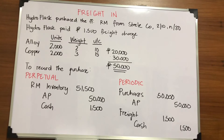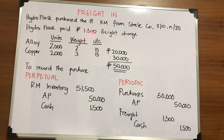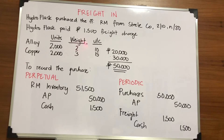Let's take an example for the purchase of raw materials and recognition of freight in. Hydroflask purchased raw materials from Steel Company with terms 2/10 and net 30. Hydroflask paid $1,500 as freight charge. There are two types of raw materials: alloy and copper, each with 2,000 units. The weight allocated for alloy is 2 and for copper is 3. Unit cost for alloy is $10 and for copper is $15, giving invoice costs of $20,000 and $30,000 respectively.